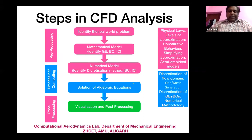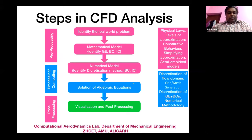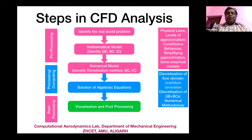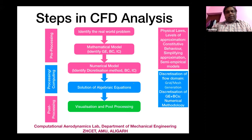CFD is basically divided into three parts: pre-processing, processing/computing, and post-processing. In pre-processing, you identify the real problem, develop the mathematical model — governing equations, boundary conditions, and initial conditions — then proceed to numerical modeling, where you identify the discretization approach and discretize the boundary and initial conditions.